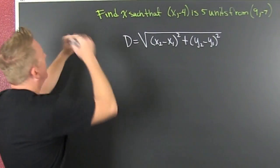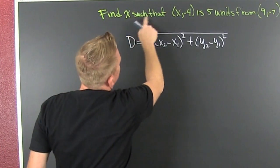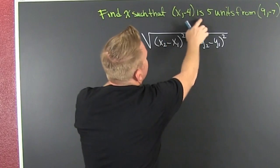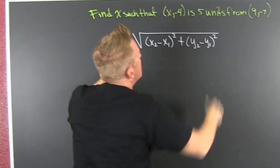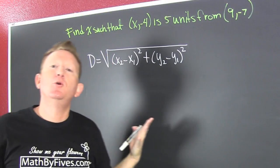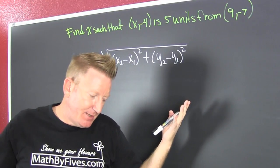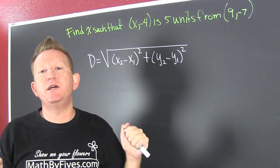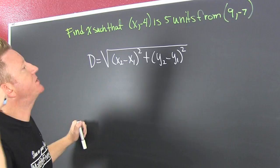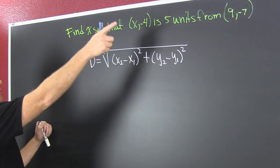Oh boy, what? We are looking to find an X such that this point is five units away from that point. Now, what are they looking for? They want to see if you're going the distance. He's going for it.